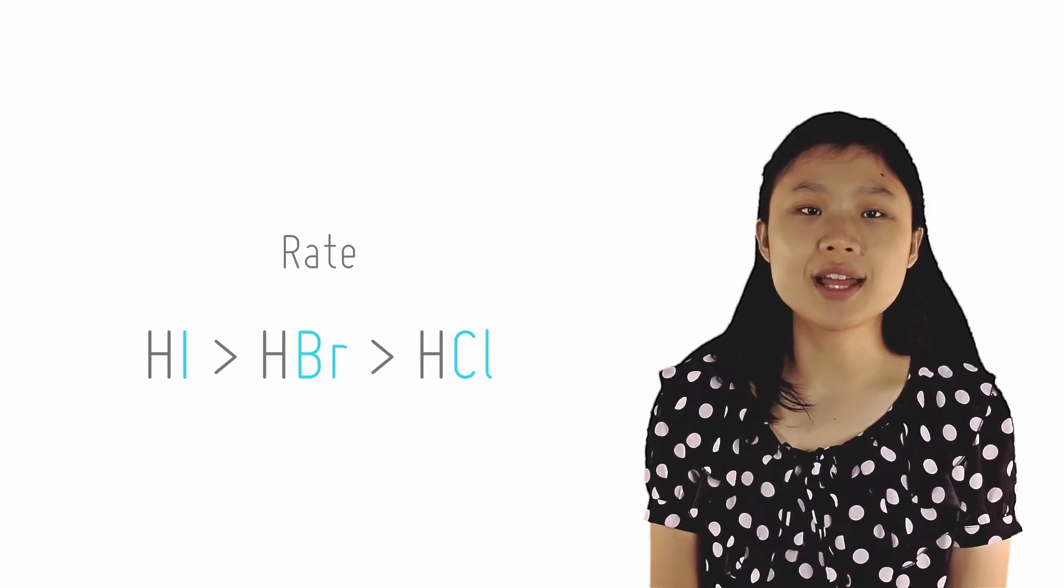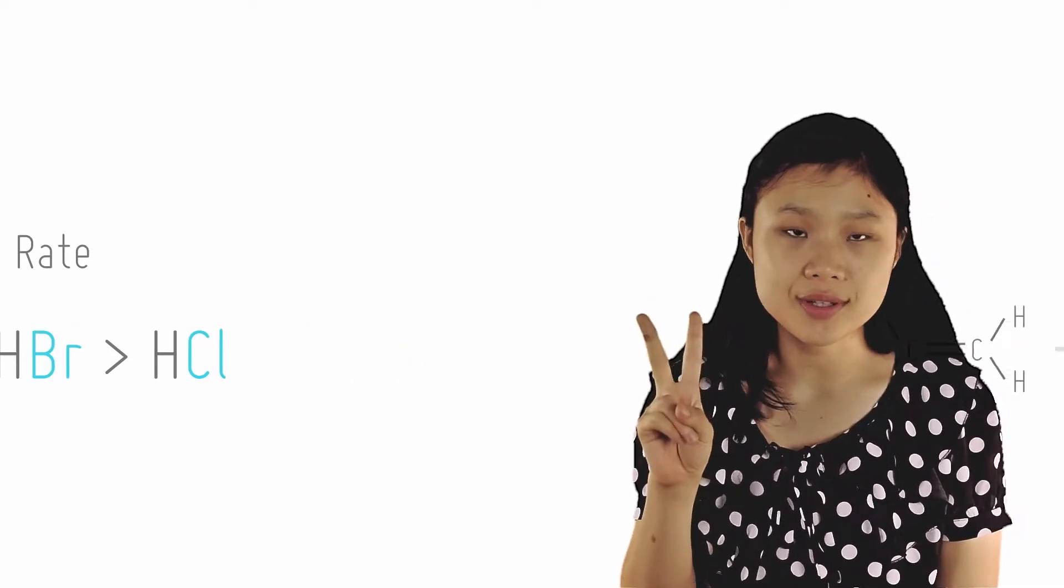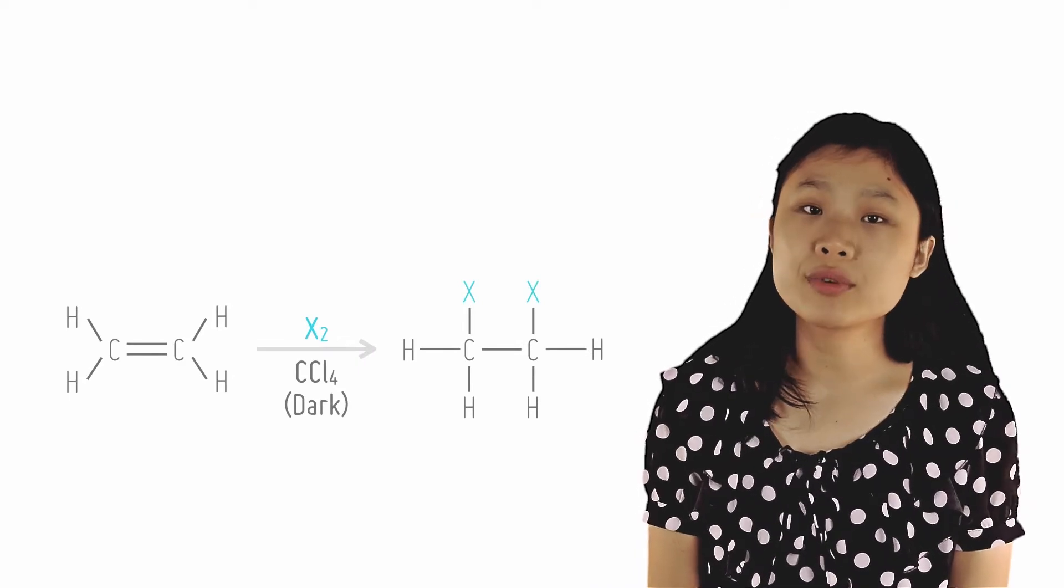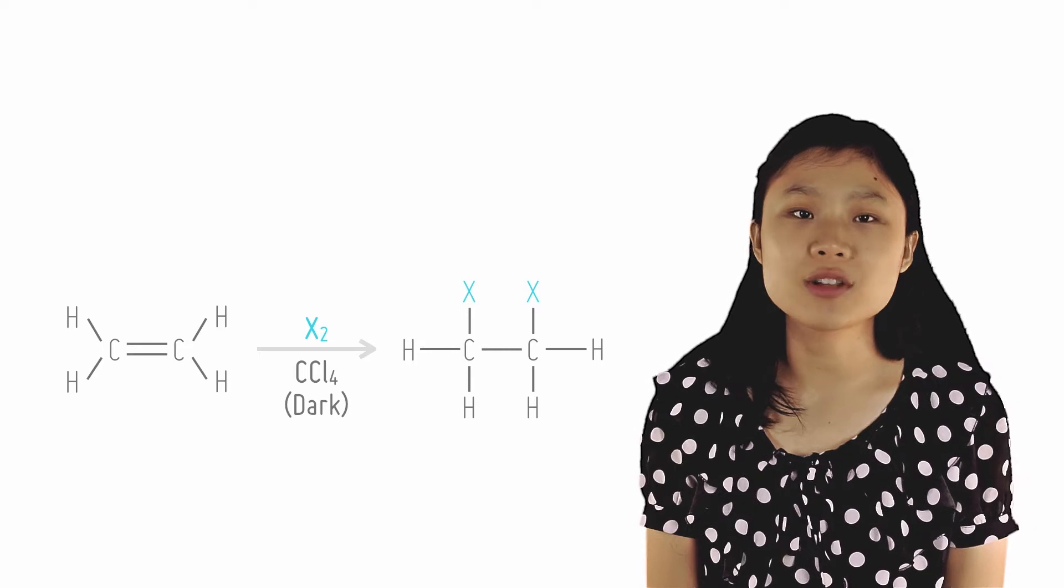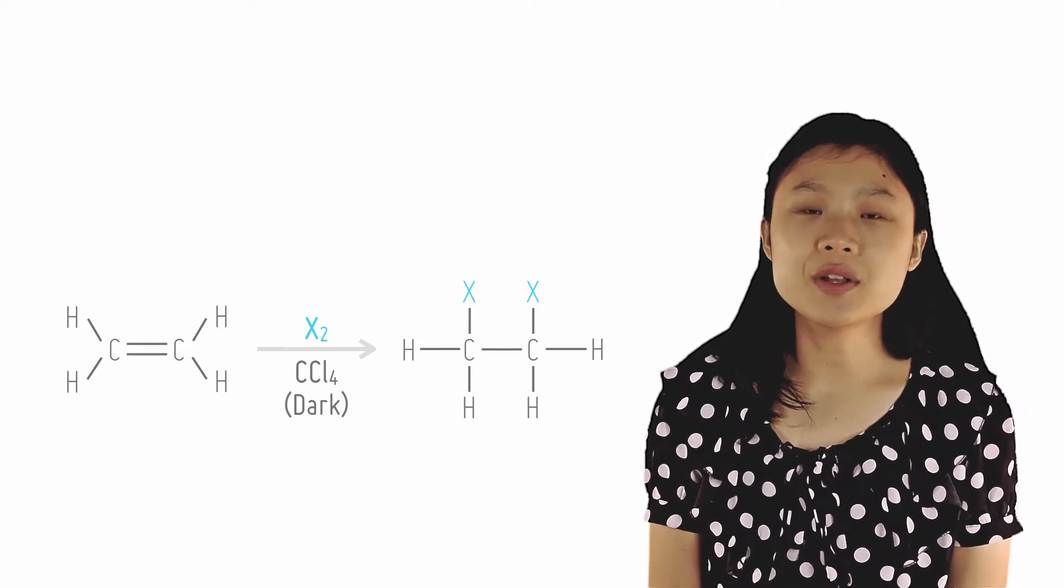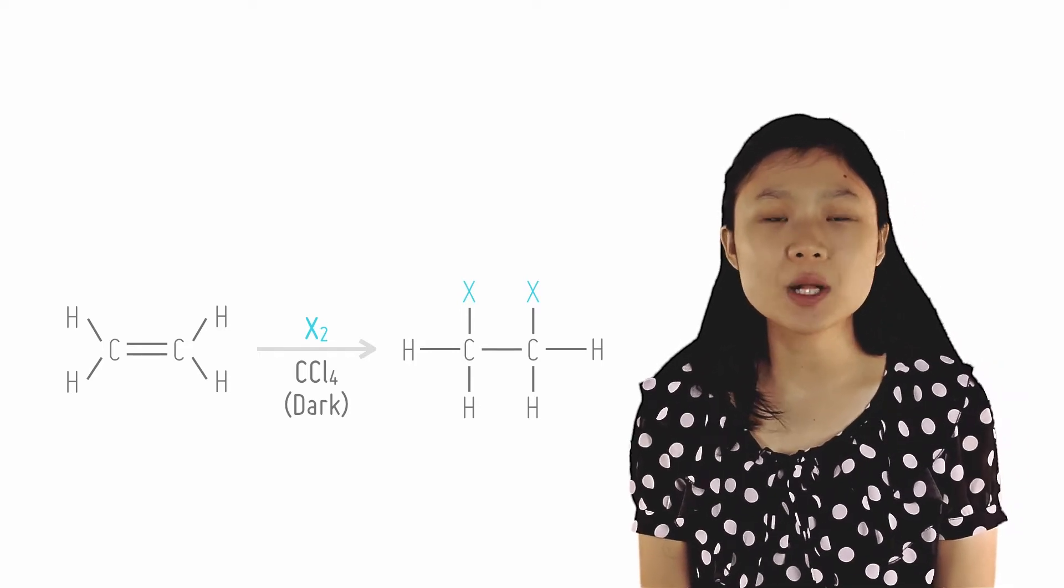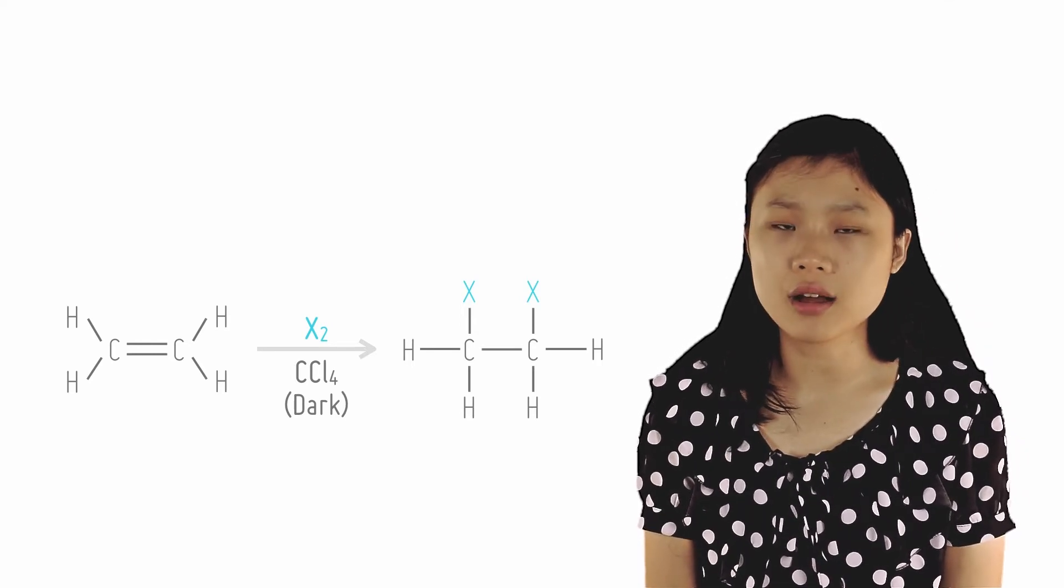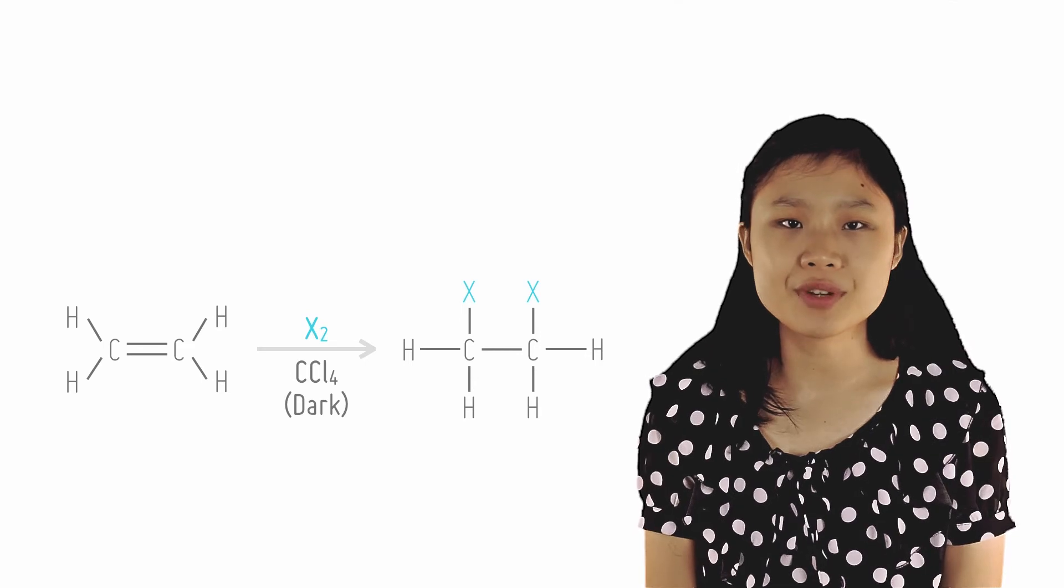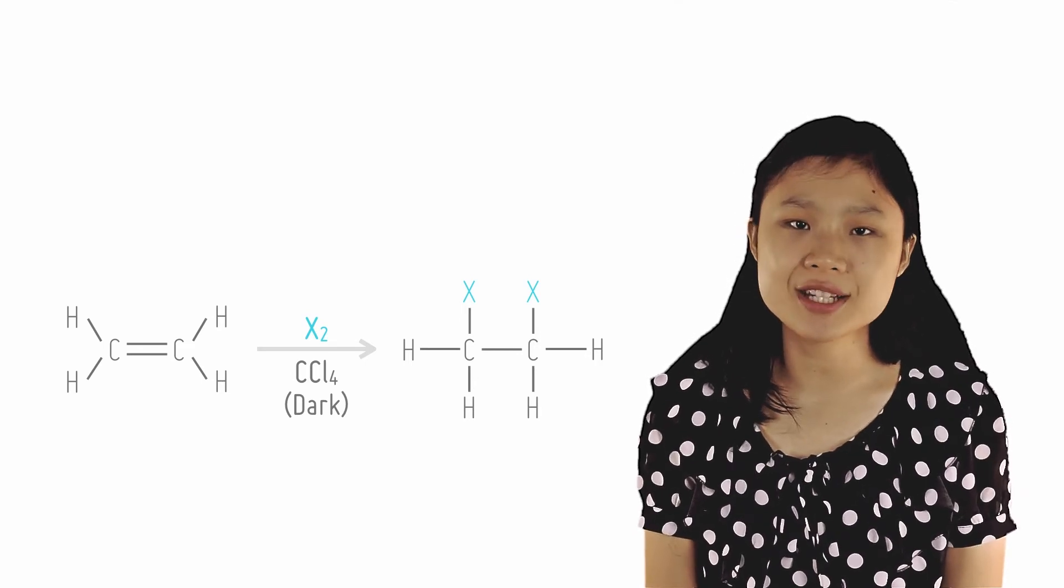Dihalogenation, which is electrophilic addition of two halogens across the C double bond, can occur when the reagent used is X2 and CCl4, an organic solvent. The halogen molecule used can be Cl2 or Br2. The condition we must specify is room temperature and in the dark to prevent free radical substitution reaction from occurring and contaminating the products.